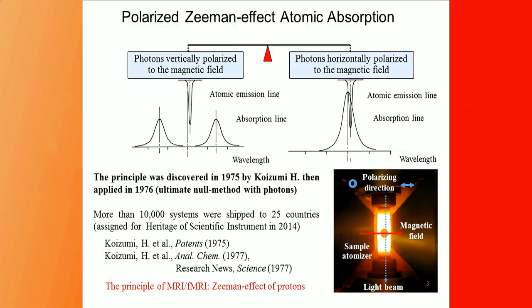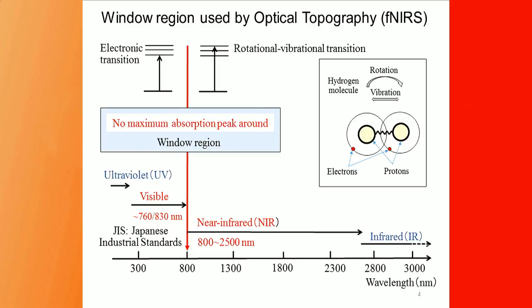At that time, I also worked on the polarized Zeeman effect atomic absorption, which is now popular worldwide. I worked across the spectrum from ultraviolet to far infrared. I'm still thinking about the definition of functional near-infrared spectroscopy, because in spectroscopy the definition of near-infrared is from 800 to 2,500 nanometers, and we are using wavelengths around 800 nanometers.